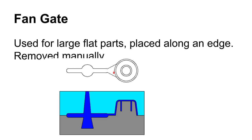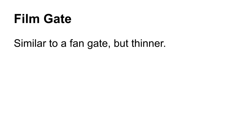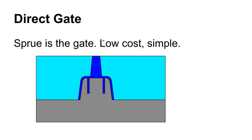A fan gate looks like a side gate but thins out and allows you to distribute the plastic across a wider area. A film gate is the same idea, only thinner. A direct gate is the cheapest and simplest way to gate — you may see this on really cheap plastic buckets where you turn the bucket over and can see the gate right in the middle. That still has to be trimmed off in a secondary step.